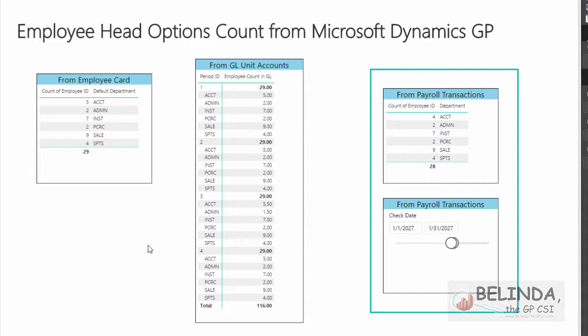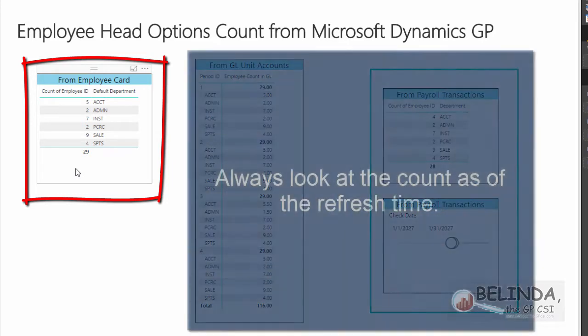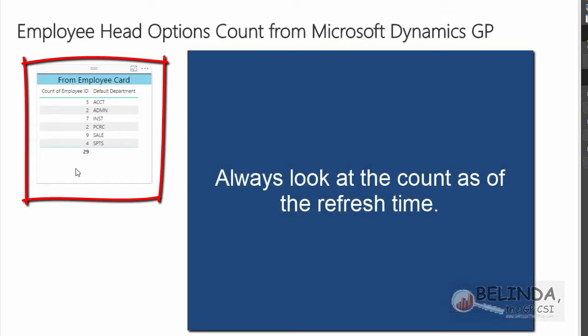This is the first in a four-part series. The second, third, and fourth parts will show specifically how I created these visuals from three separate data sources. Starting with the employee card — I went and pulled from the employees, which I think is what the person who asked the question was doing. This will always look at employee count as it exists at the time of the refresh.